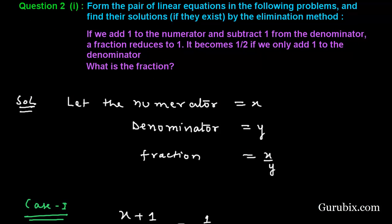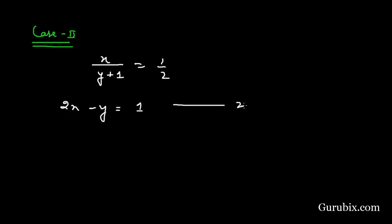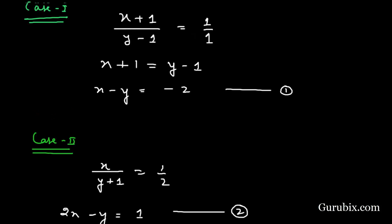This means the numerator remains the same and we only add 1 to the denominator, then it becomes 1 over 2. We shall write this equation in its standard form, and it becomes: 2x minus y equals 1. This is our equation number 2.